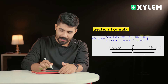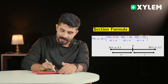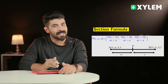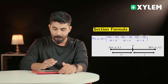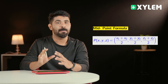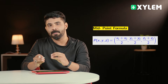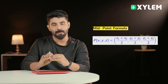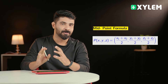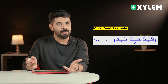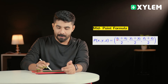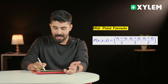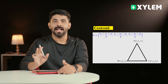For external division, we need to apply negative signs. Now let's go to the Midpoint Formula: x1 plus x2 divided by 2, y1 plus y2 divided by 2, z1 plus z2 divided by 2.